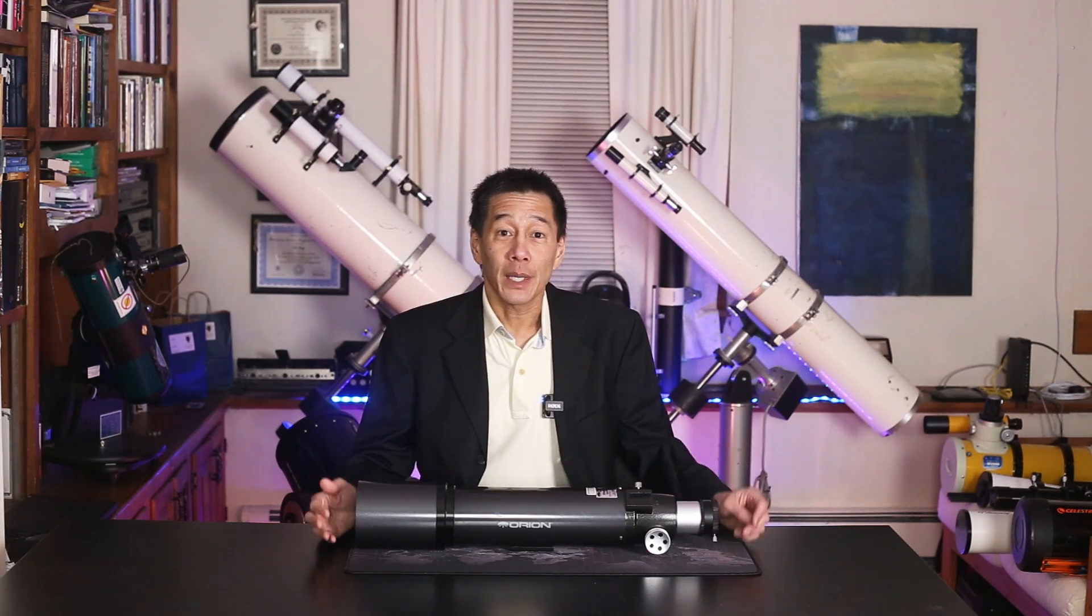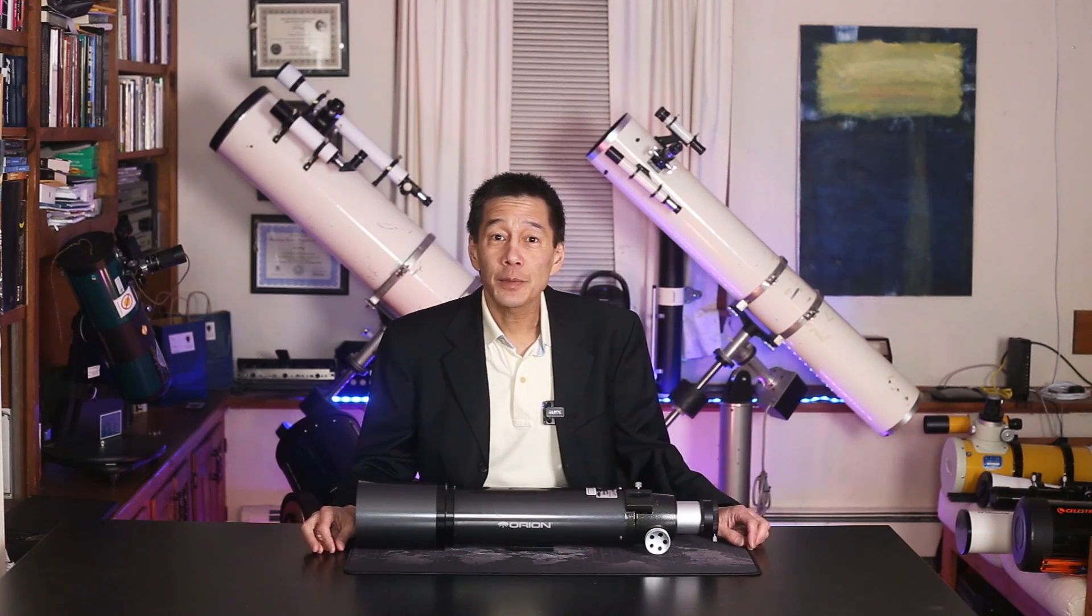Hello and welcome back to the channel. Today we're going to be taking a look at the Orion 80ED, an 80mm f7.5 apochromatic refractor, a true classic in our hobby. This thing has been in the Orion catalog for a very long time, almost 20 years. In fact, those of you with long memories may recall that I did a review of this product for the February 2004 issue of Sky and Telescope. Hard to believe it's already been 17 years.